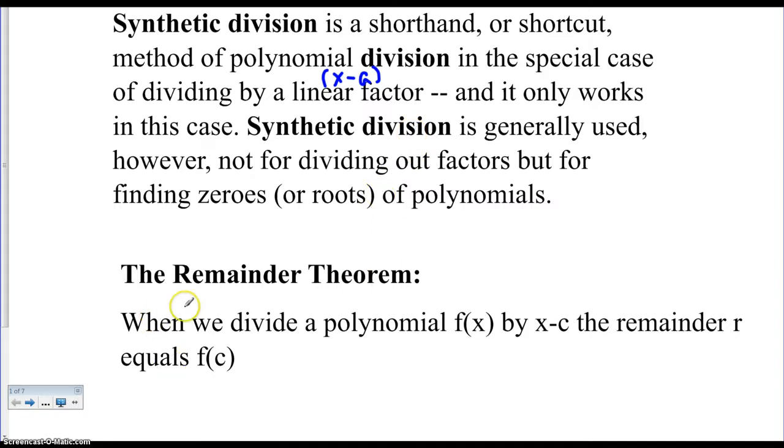And the remainder theorem states that when we divide a polynomial f(x) by x minus c, the remainder r equals f(c). So if I plug whatever the zero is for this binomial, and I plug it into the equation, I will get what the remainder should be.